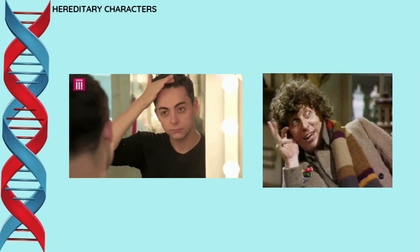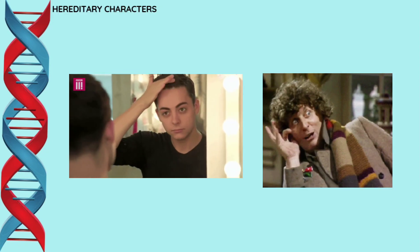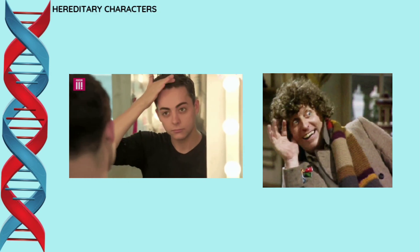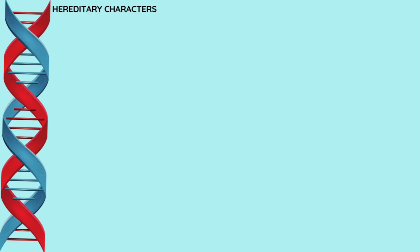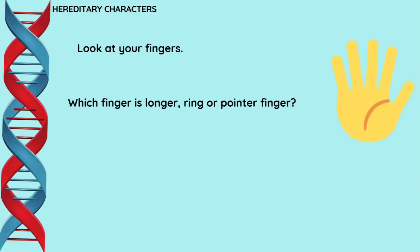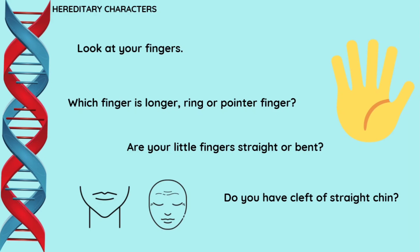Check out your hairline, fingers, and chin. Brush back your hair — is your hairline straight or do you have a widow's peak? Look at your fingers: which finger is longer, ring or pointer finger? Are your little fingers straight or bent? Do you have a cleft or straight chin? Compare these traits with those of your mother and father. With whom do you share the traits you exhibit, and from which parent did you likely inherit the genes that allowed you to express each of these traits?